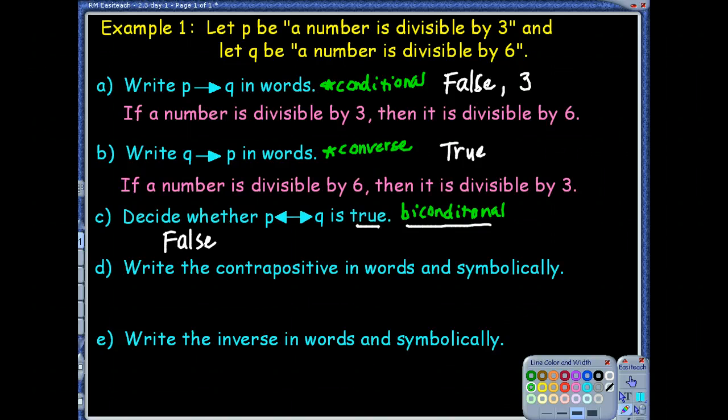Okay. Moving on. Part D. It says, write the contrapositive in words and symbolically. Okay. Oh, wait a minute. Don't we usually do inverse next? Oh. You flipped this on me, so I would pay attention, didn't you? Okay. So we got to think. Got to think.